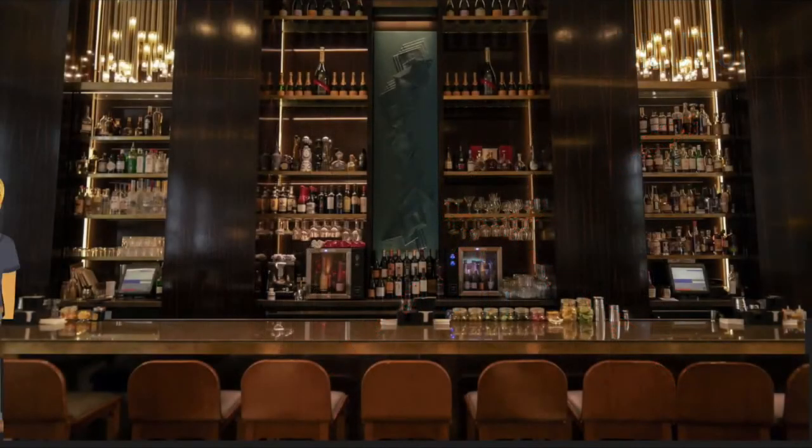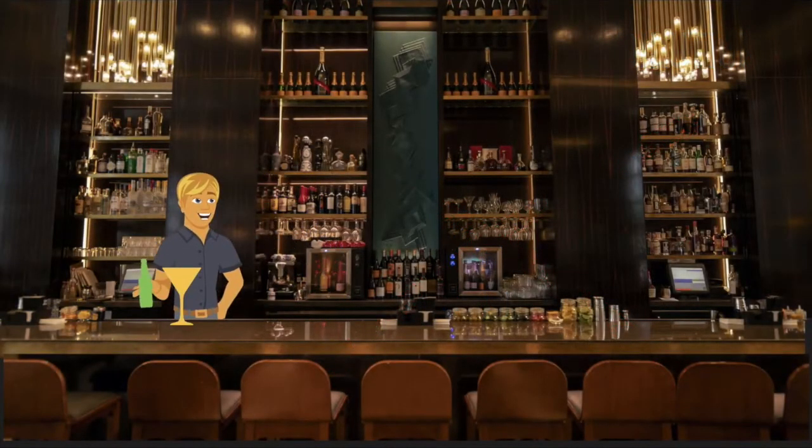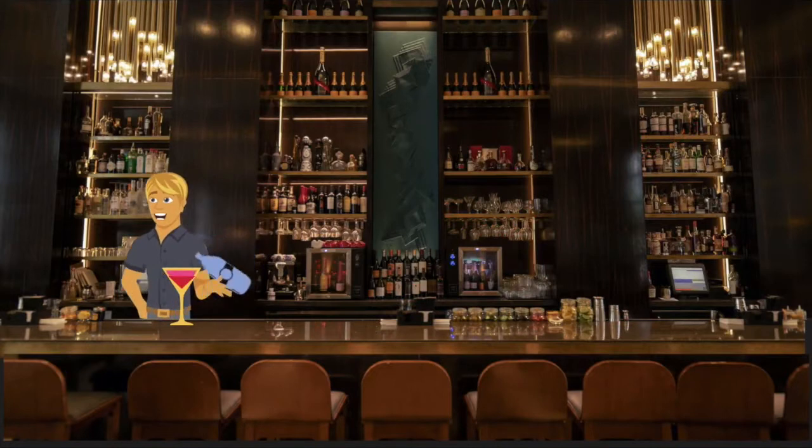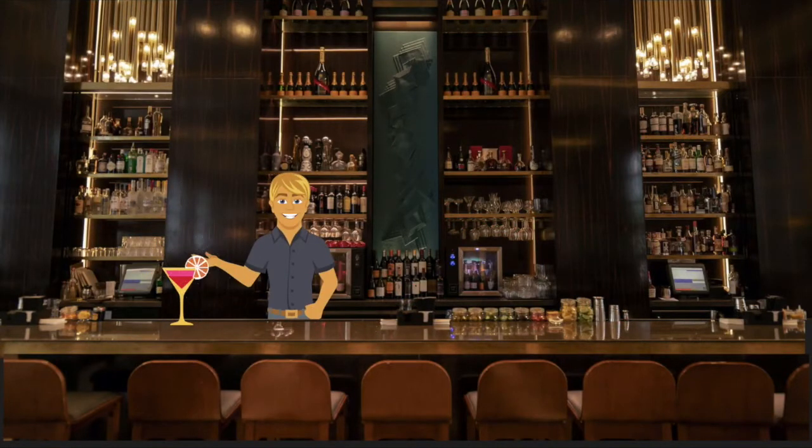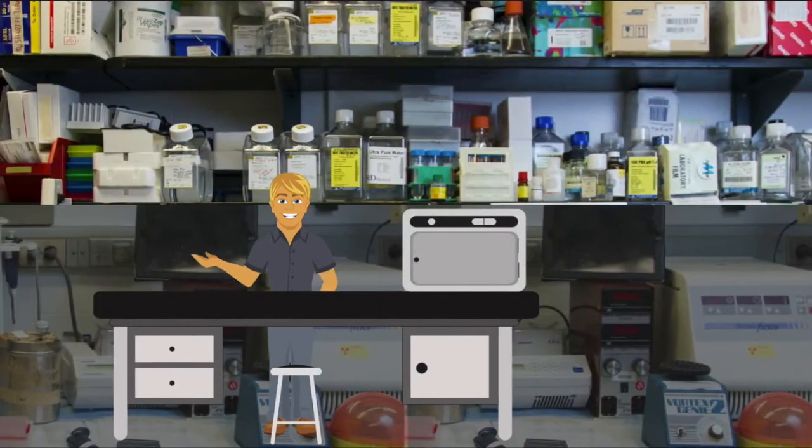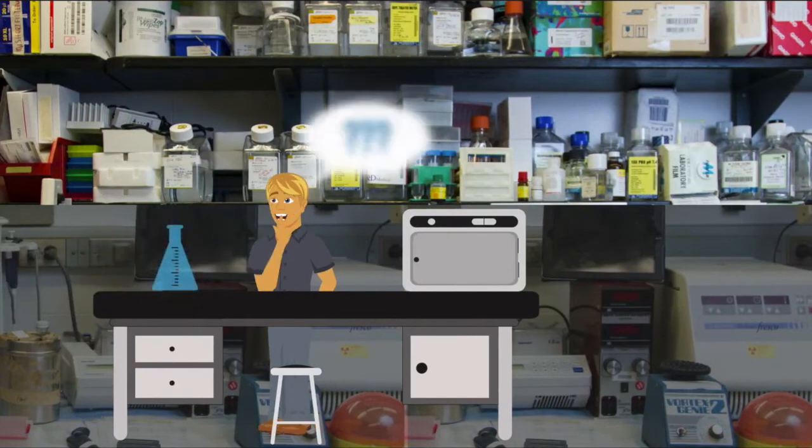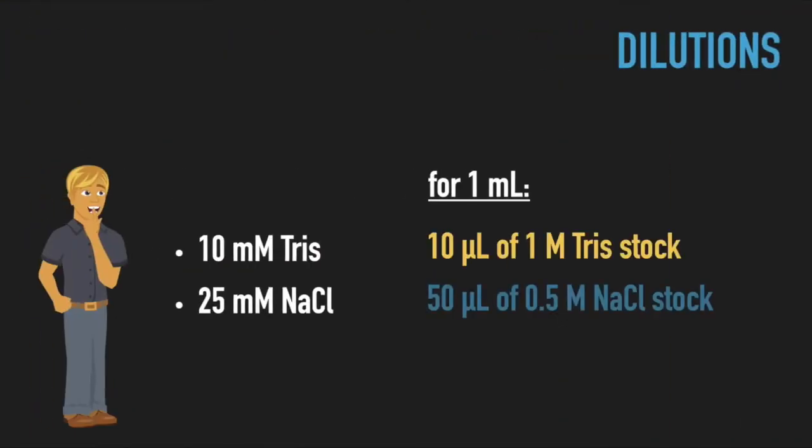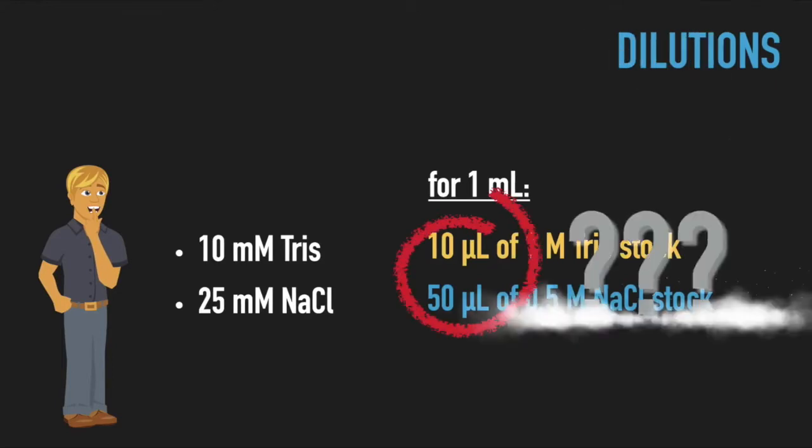This is very much like making a cocktail by mixing several concentrated components. We can dilute concentrated stock solutions to the final, needed concentration. How do we determine the volume of the stock to add, so that we reach the needed, final concentration?